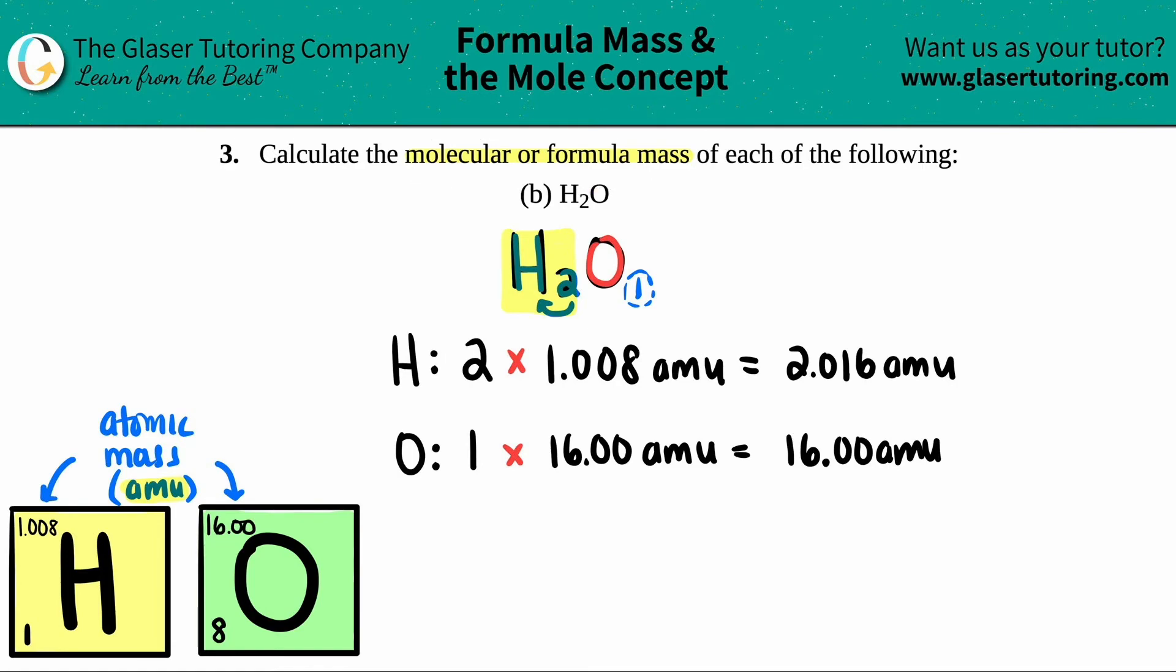But they want the total molecular or formula mass, so what are we going to do to these numbers? Yeah, we're going to add them up. That's how we get the total of all the hydrogens and all the oxygens. Just add up these numbers. So 16 plus 2.016 is 18.016 amu, and that is the total molecular mass or formula mass of water. So this whole thing, H₂O, equals 18.016 amu.